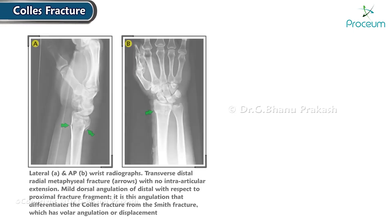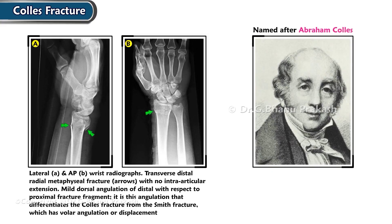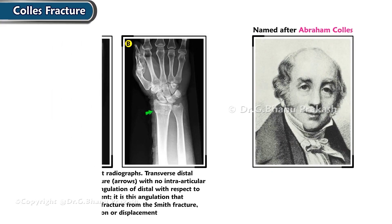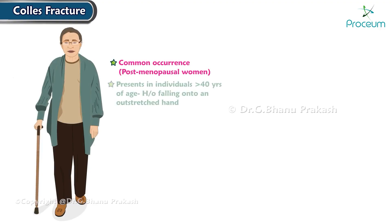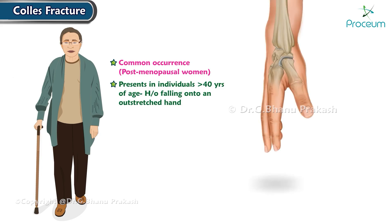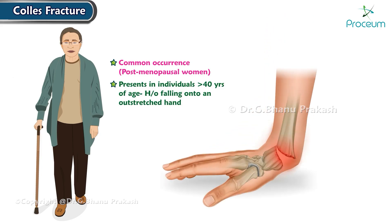Collis fracture, named after Abraham Collis who first described it, is a common occurrence particularly in postmenopausal women. It typically presents in individuals above 40 years of age who have a history of falling onto an outstretched hand.